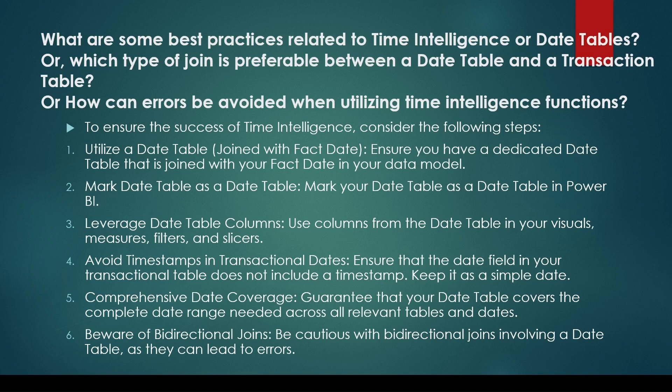Avoid timestamps in transactional dates: be cautious about timestamp presence in transactional tables like the sales table. Timestamps can disrupt joins with the date table, as the date table typically lacks timestamps — the join might only be possible with the 12AM timestamp, leading to missing data. To address this, consider adjusting data types to date, checking for any timestamp, and if present, creating a date-only column for joins.